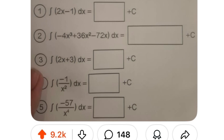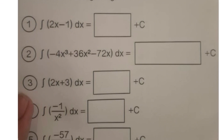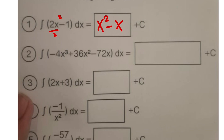They are all reverse power rule questions. For the first one, we have the integral of 2x minus 1. Here x is to the first power, so I add one to the power, giving us 2 divided by the new power — 2 divided by 2 — which gives x squared. For the constant minus 1, multiply by x to get minus x. The answer is x squared minus x, and the plus C is already there for us.